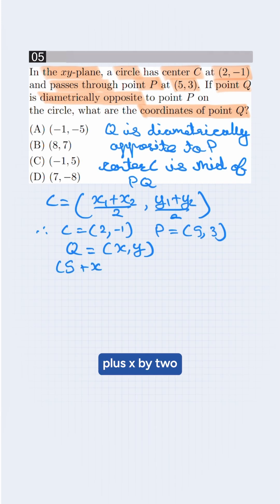This will be 5 plus x by 2 is equal to 2 and 3 plus y by 2 is equal to minus 1.